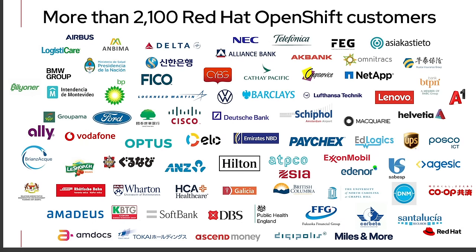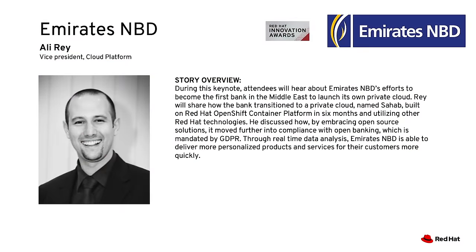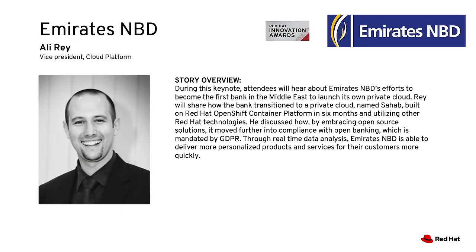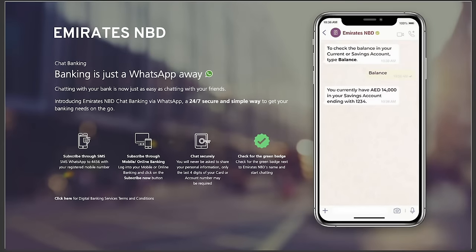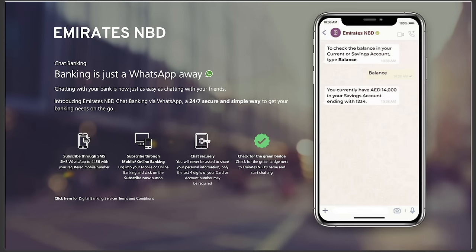Locally, we have public references from this region. Emirates NBD's WhatsApp banking — which is innovative for this region — runs on top of OpenShift, showing the capabilities they were able to add on top of core banking: microservices for WhatsApp, internet banking, mobile banking, and more. They can keep extending their core functionality with OpenShift.